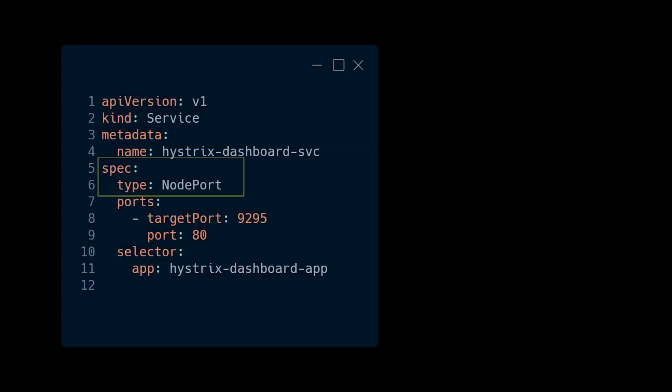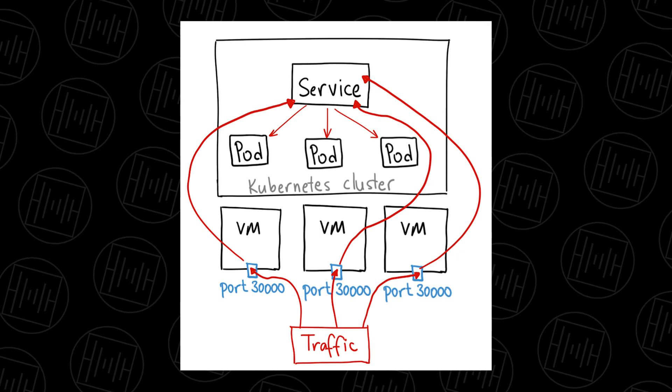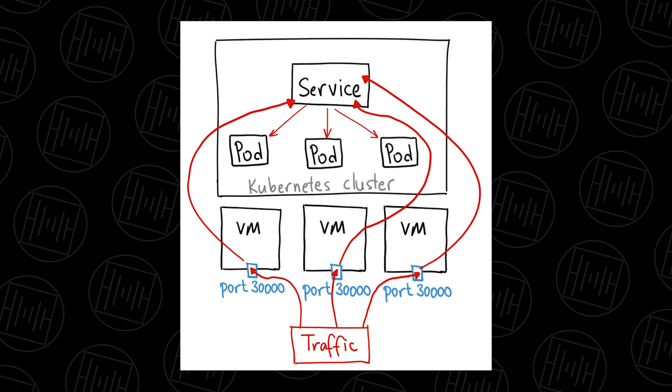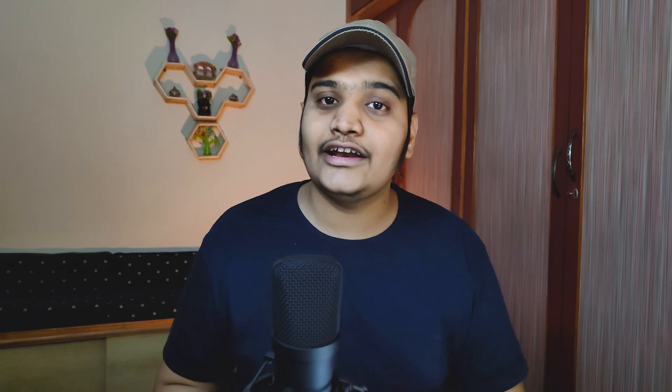The next service is NodePort. When you define a NodePort service, you set the type to NodePort and specify the nodePort attribute within a defined port range. When created, that port opens on every node in the Kubernetes cluster. For example, if you open port 32000, that port will be open on all nodes. This makes it an external service, but it is not very secure, so using NodePort in production is not advisable.